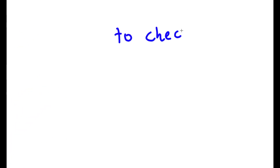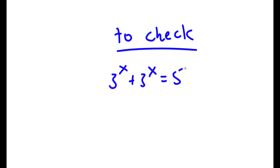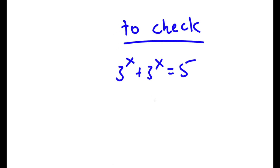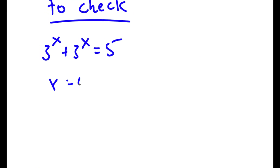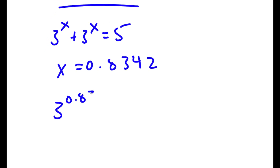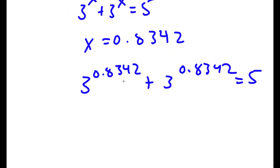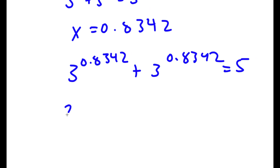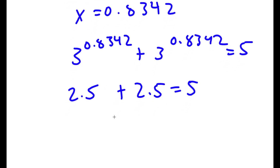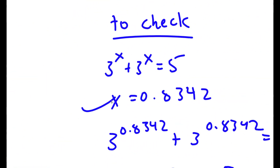Now to check: from our original equation, 3 to the power of x plus 3 to the power of x equals 5, with x equal to 0.8342. We have 3 to the power of 0.8342 plus 3 to the power of 0.8342 equals 5. Now 3 to the power of 0.8342 is approximately 2.5, so 2.5 plus 2.5 equals 5, and 5 equals 5. This confirms the value of x is correct.